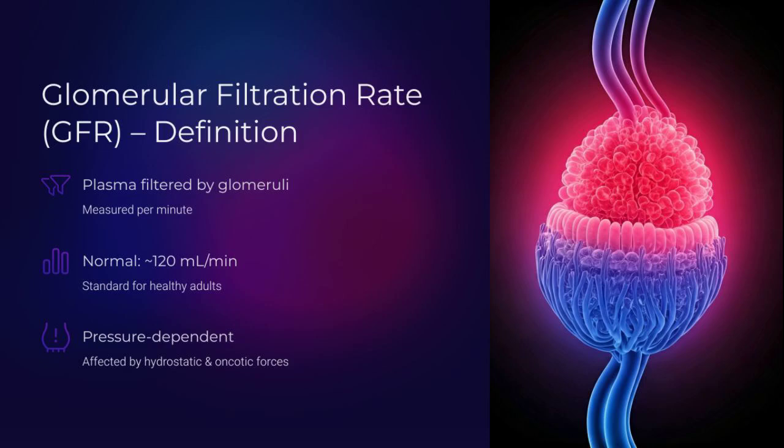GFR is the glomerular filtration rate — the volume of plasma filtered per minute by all functioning glomeruli. Normal is about 125 mL/min in a healthy adult. It's the vital sign of the kidney, more fundamental than blood pressure in nephrology.